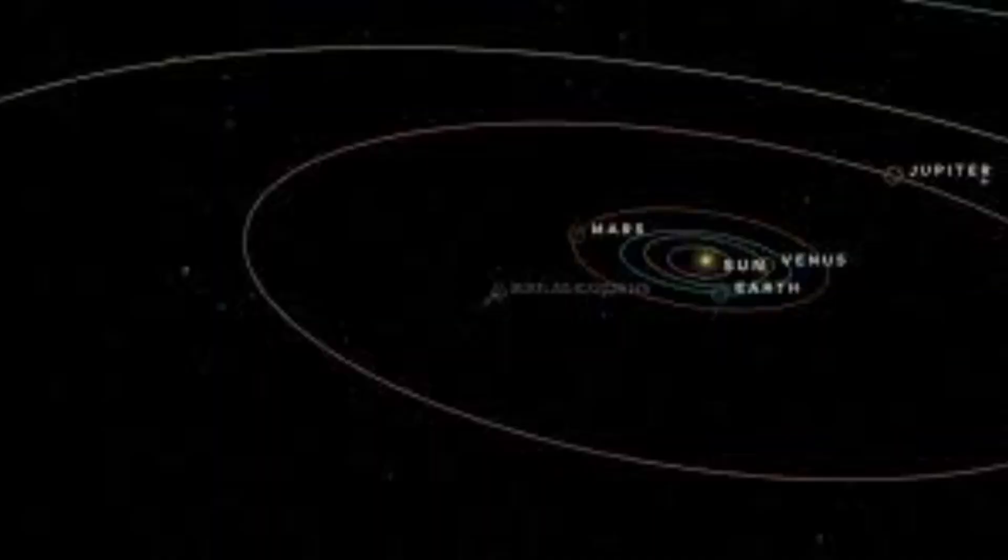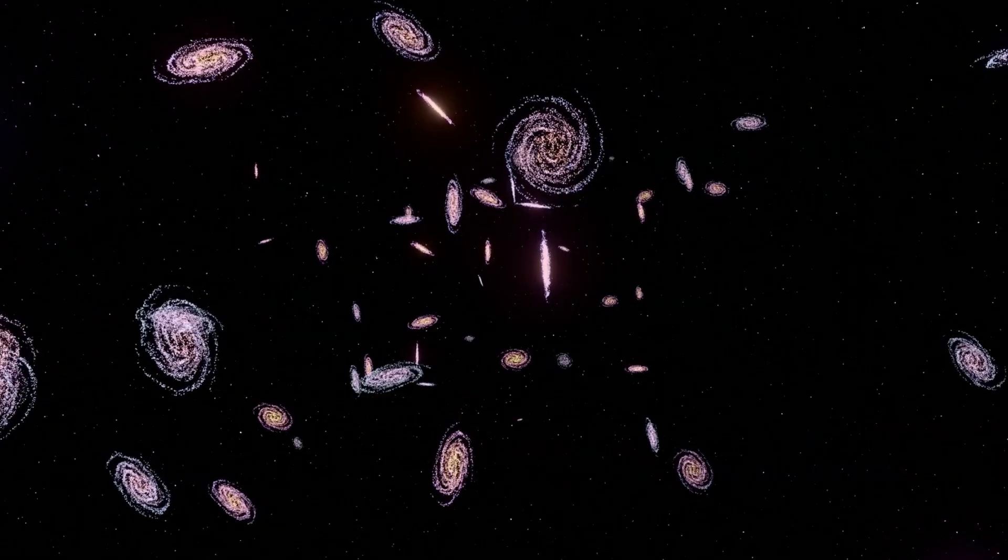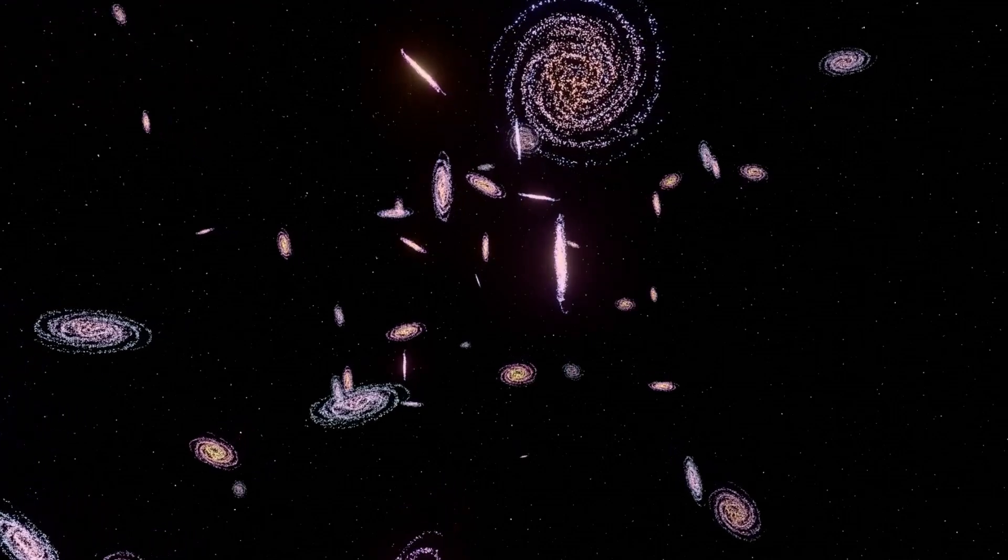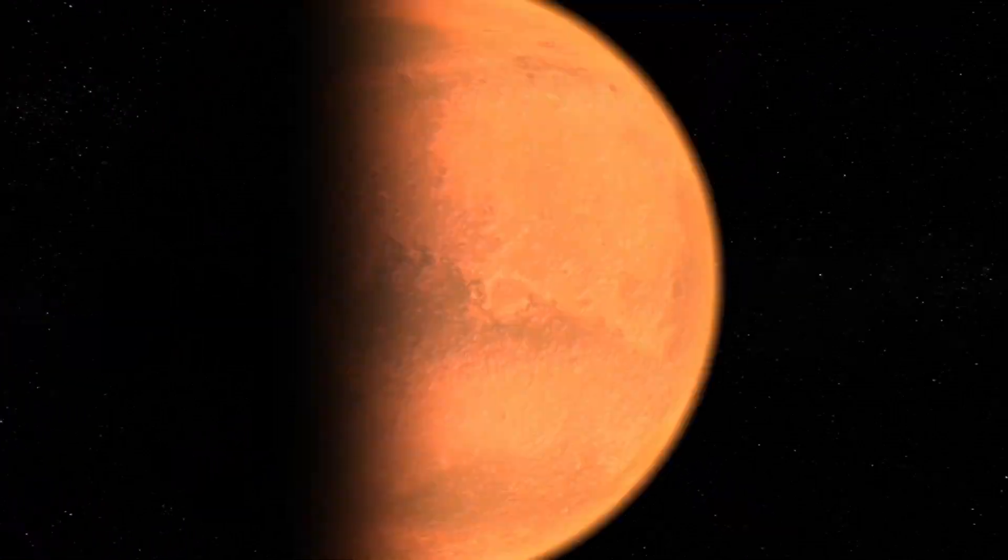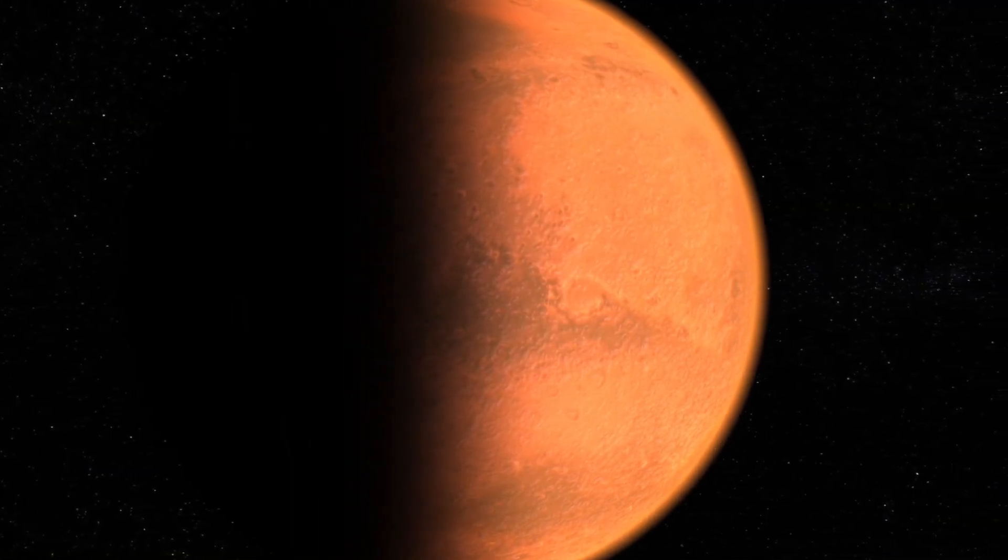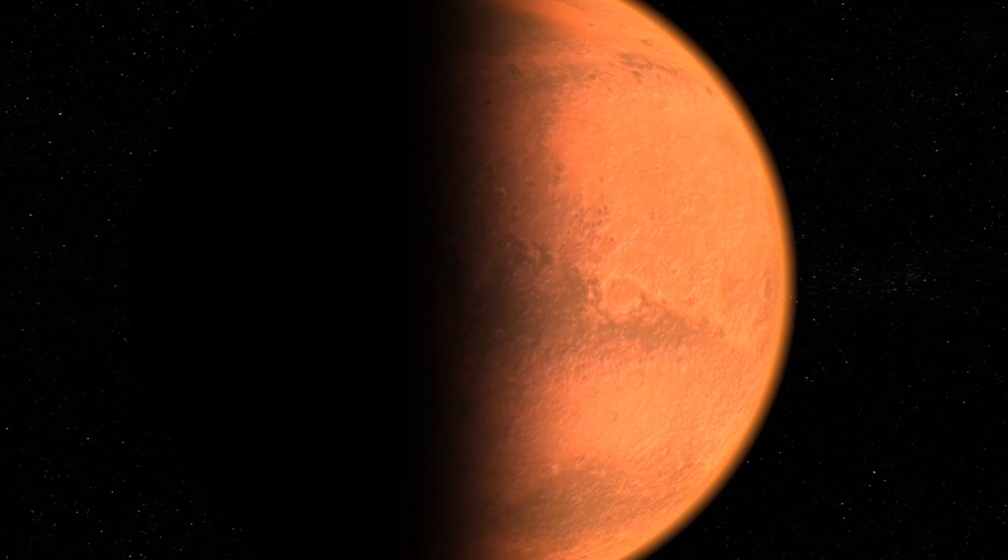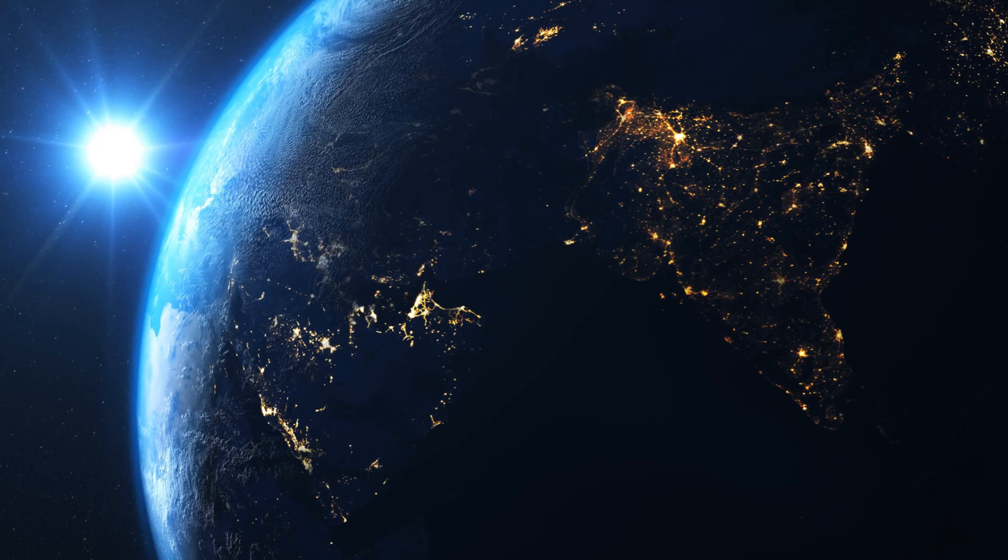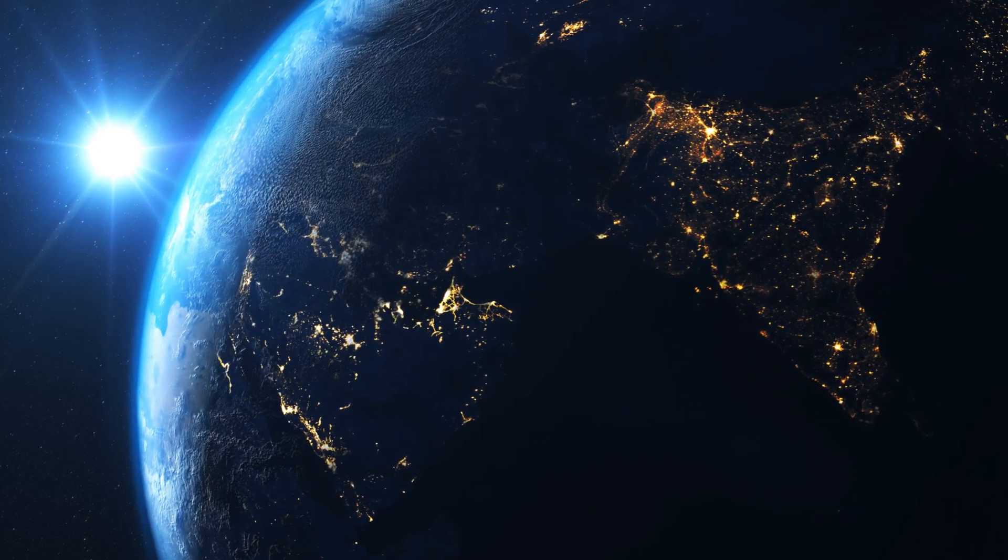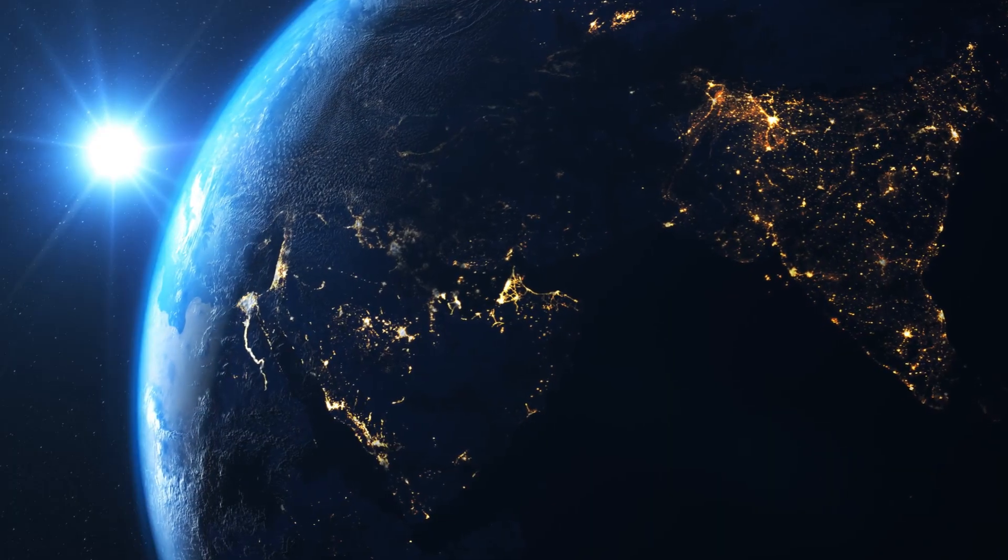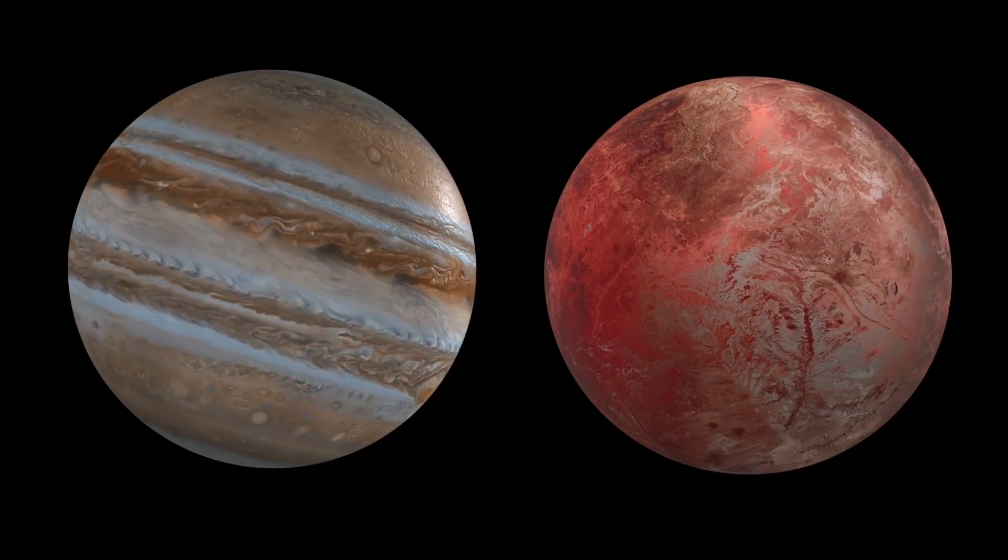The trajectory of 3I Atlas reads less like a random path and more like a cosmic itinerary. On September 30, 2025, it passes within 13.9 million kilometers of Mars. Just two weeks later, on October 14th, it makes its closest approach to Earth, skimming by at 27.5 million kilometers—closer than any interstellar visitor ever recorded. Venus is next, followed by a final swing past the gas giant Jupiter in March 2026.